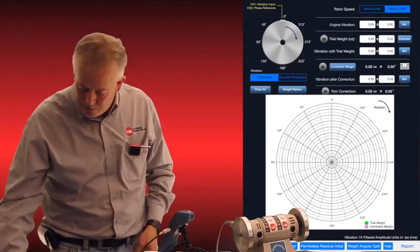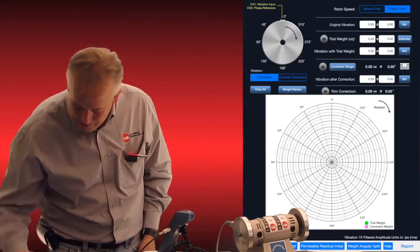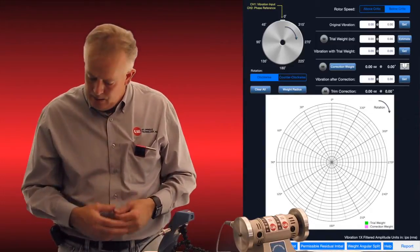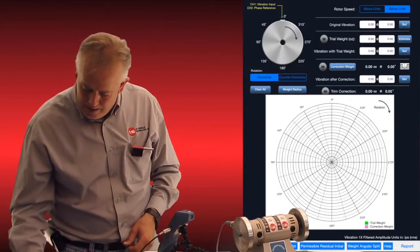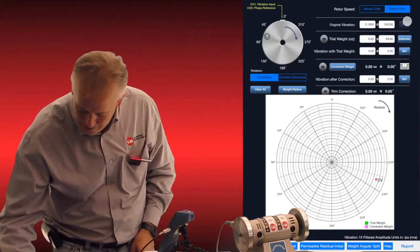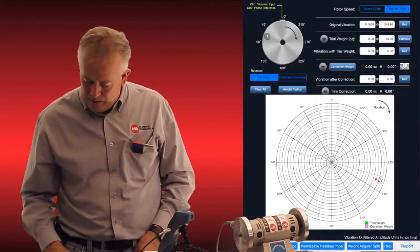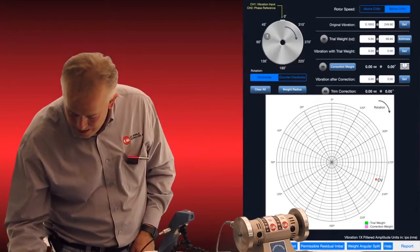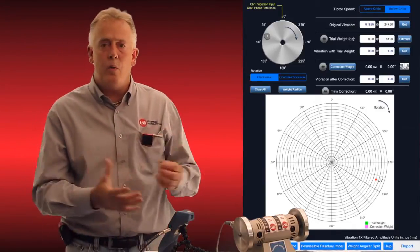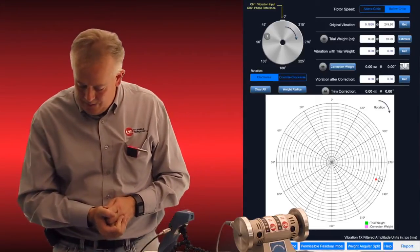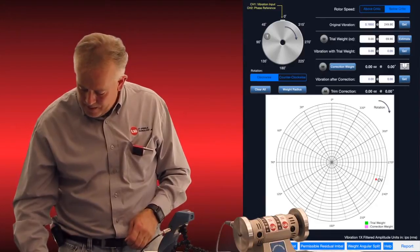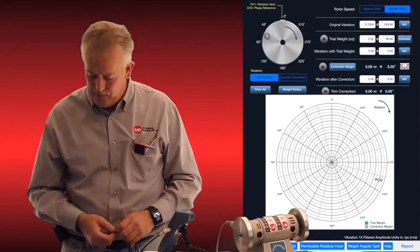And the next thing you'll see is get, estimate, and get. Get button means simply to capture the data. We're getting the data. So that's the first thing we do is once our setup and our motor is running, we simply hit the get button. And the get button immediately tells me I have 0.18 inches per second at 249 degrees being my heavy spot. And you'll see in the polar plot, it's put an OV red mark down here that's indicating that heavy spot.